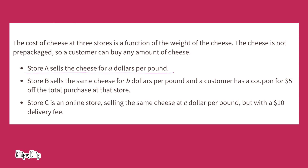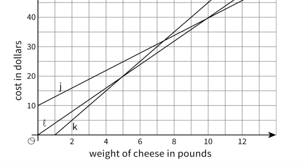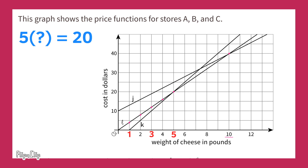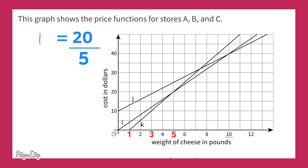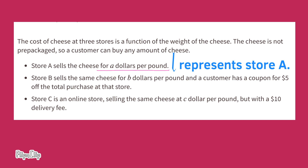That leaves Store A, which sells cheese for A dollars per pound. Looking at line L on the graph, it intersects at five pounds of cheese and twenty dollars. We can write a one-step equation: five times what number equals twenty. Replacing the question mark with L gives us five L equals twenty. Dividing both sides by five, five L divided by five is L and twenty divided by five is four. L equals four — line L represents Store A, which sells cheese for four dollars per pound.